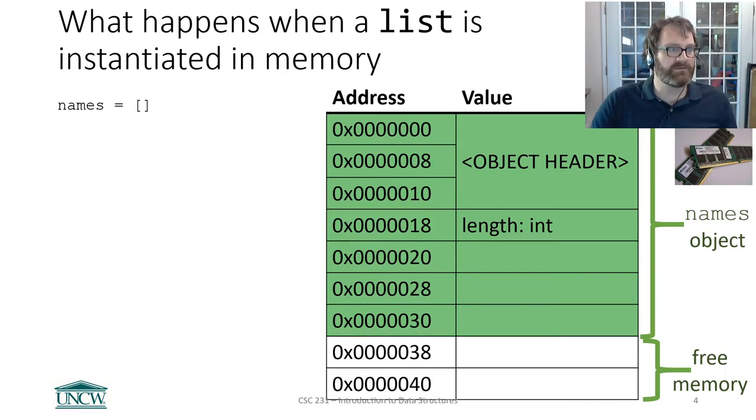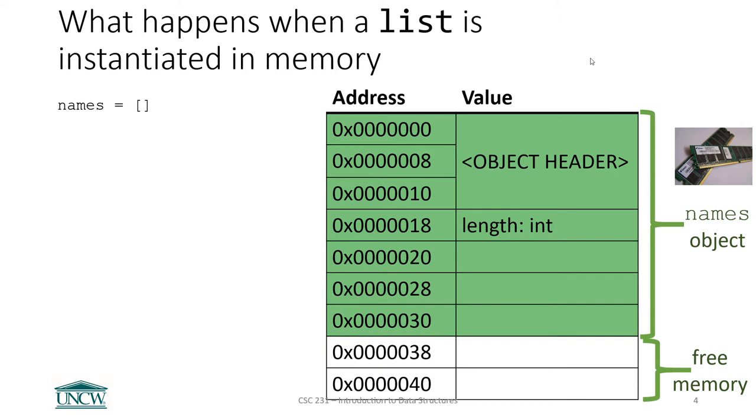Let me get rid of myself on the screen here so we've got more room. So you are creating a list in Python. You have made a new empty list. Let's talk about very specifically what happens so that we can understand why this array list data structure is so fast in certain cases. Here's our view of memory. I've just picked a block out of memory. The address values here aren't really important.